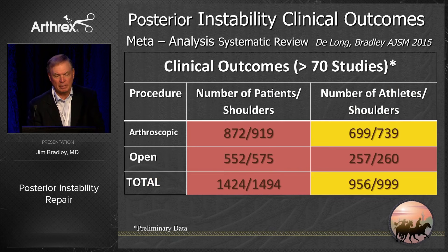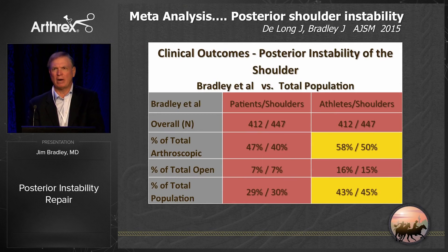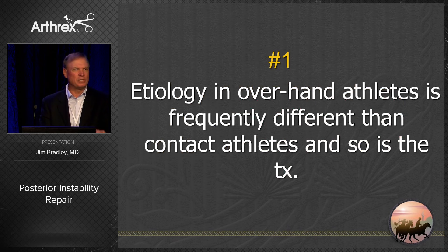What we did was a meta-analysis of the world literature — Jeff DeLong and I — and we found in Arthroscopy almost 700 shoulders in athletes out of 739. Of that group, 58% of the athletic shoulders published in the world literature actually came from our group.